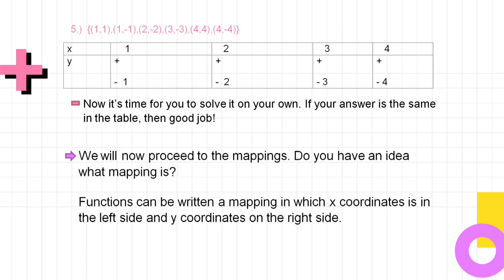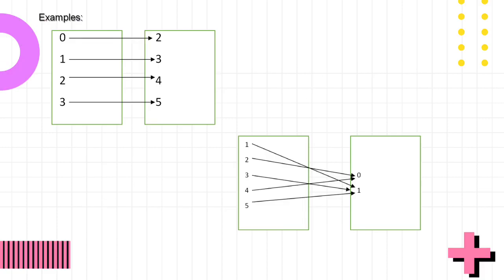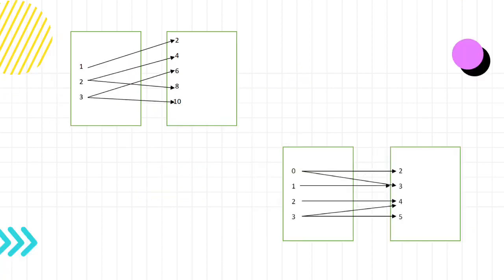We will now proceed to mappings. A function can be written as a mapping in which x-coordinates are on the left side and y-coordinates on the right side. The first example is one-to-one, and this is a function. Another is many-to-one, which is also a function. The third example is one-to-many, and it is not a function. The fourth and last is many-to-many, and this is not a function.